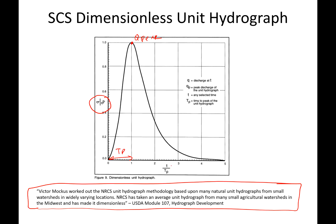That is why on the y-axis the Q-peak has a value of one, and the time to peak is also one, because the x-axis is divided by time to peak and the y-axis is divided by Q-peak. The base time is 5 times the time to peak (5·tp).